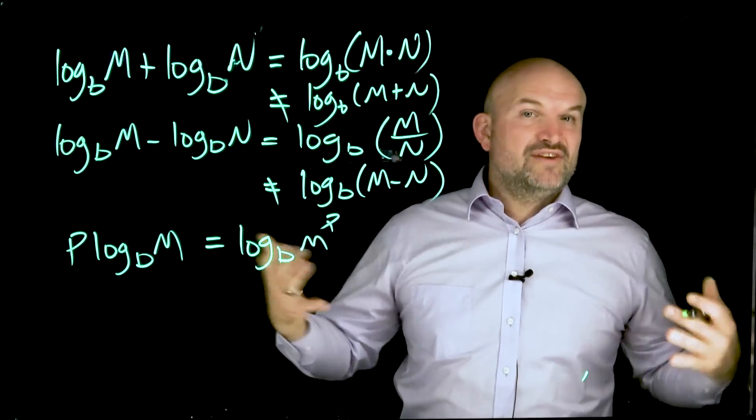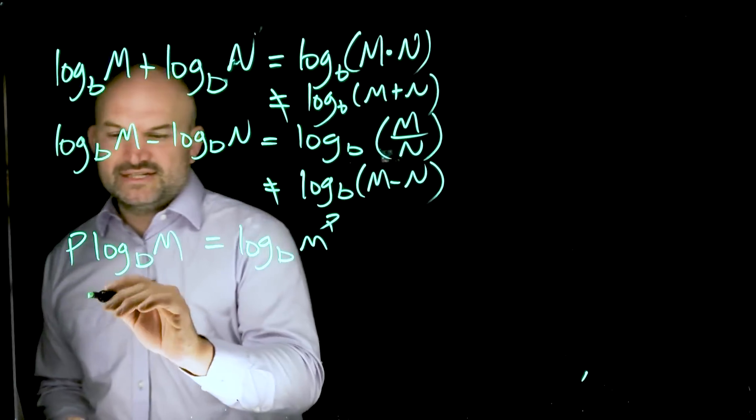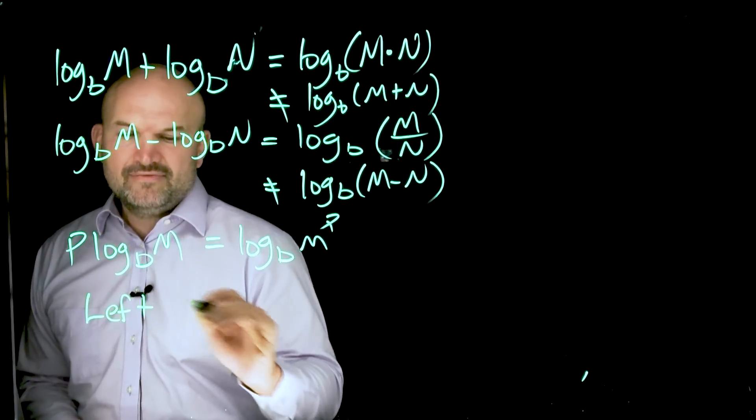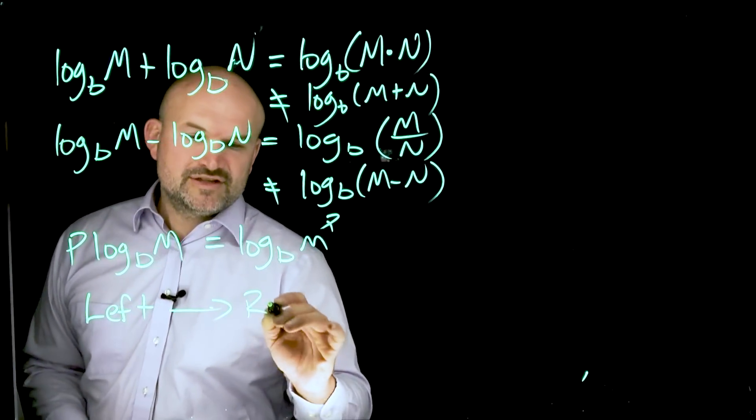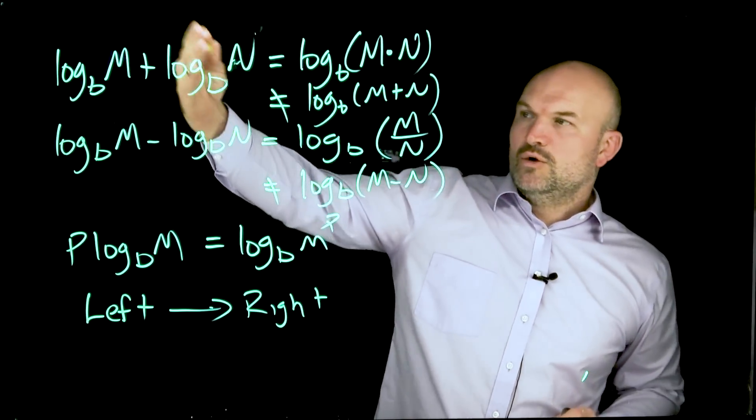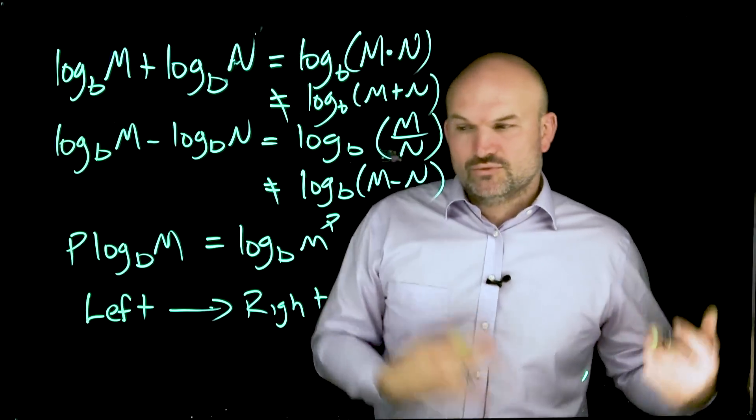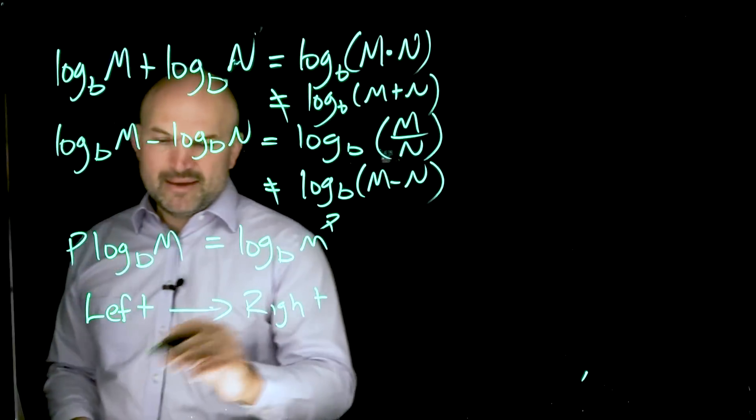When we are condensing, it's like simplifying an algebraic expression following the order of operations. It's very important that when you are condensing, that you work from left to right. So a lot of times there's going to be more than just one addition, subtraction, and number in front. Always work from left to right.